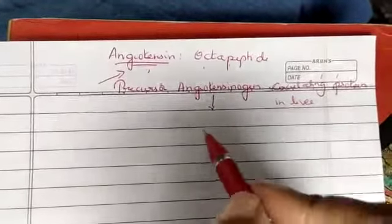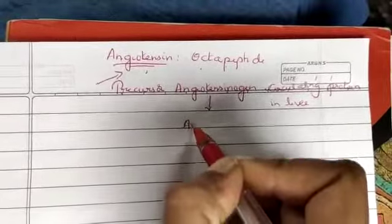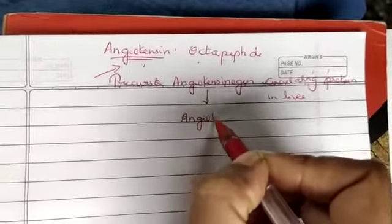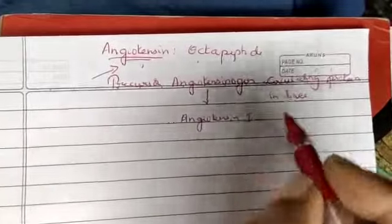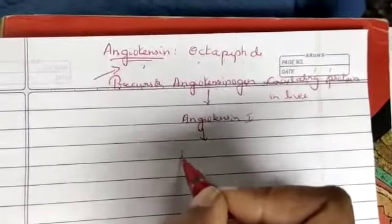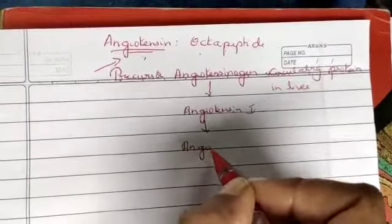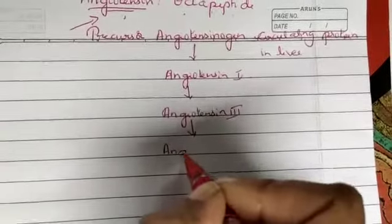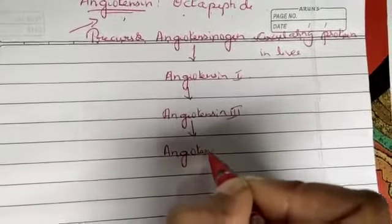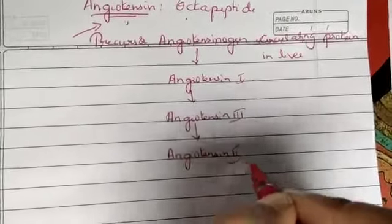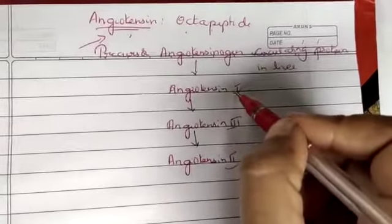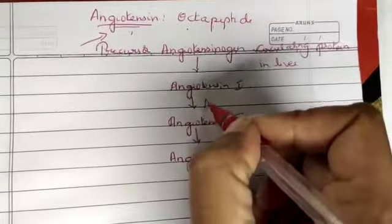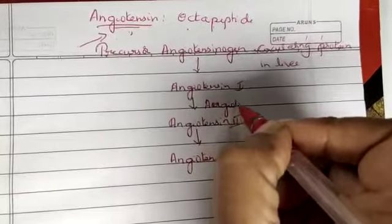This angiotensinogen is normally converted to angiotensin 1 first, then rapidly it is converted into angiotensin 2, and then it is converted to angiotensin 3. The conversion of angiotensin 1 to angiotensin 2 normally occurs in the presence of the enzyme called angiotensin converting enzyme.